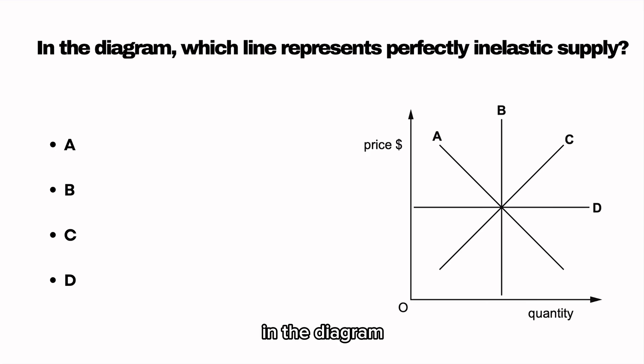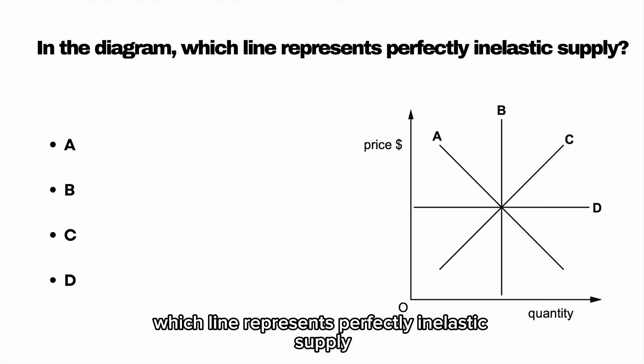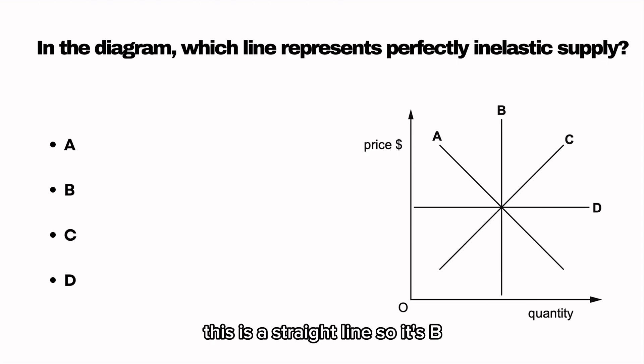In the diagram, which line represents perfectly inelastic supply? This is a vertical straight line, so it's B.